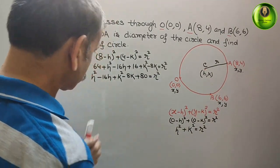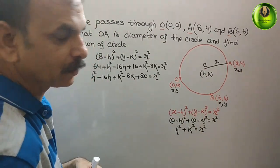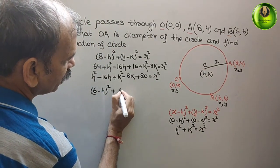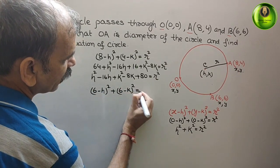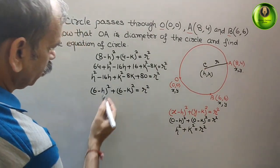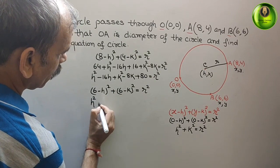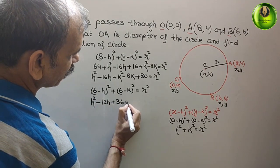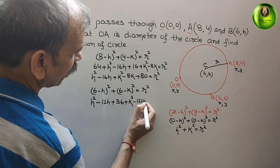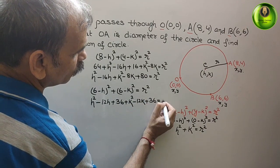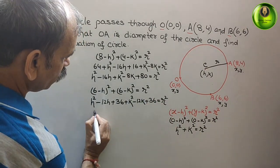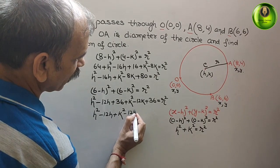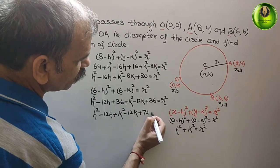Taking point B, we get: (6 - H)² + (6 - K)² = R². Expanding: H² - 12H + 36 + K² - 12K + 36 = R². Arranging: H² - 12H + K² - 12K + 72 = R².